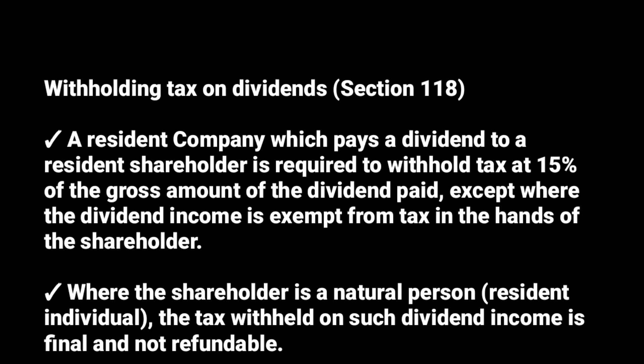Let's look at withholding tax on dividends. A resident company which pays a dividend to a resident shareholder is also required to withhold tax at a rate of 15% of the gross amount of dividends paid, except where the dividend income is exempt from tax in the hands of the shareholder. If the shareholder is not exempt, they are supposed to withhold tax at a rate of 15% of the gross income.